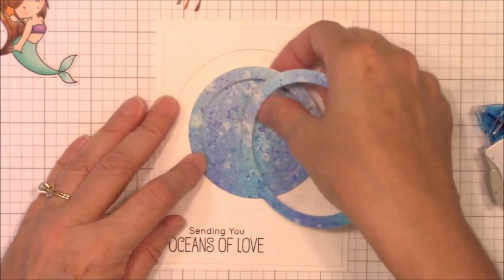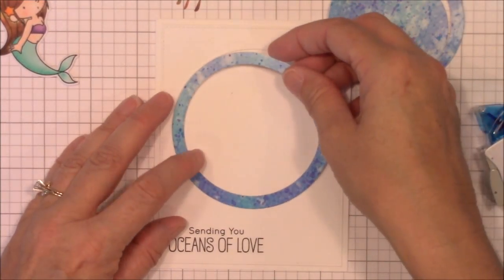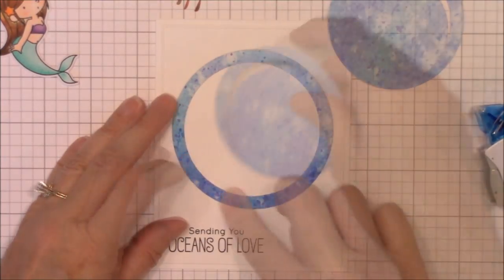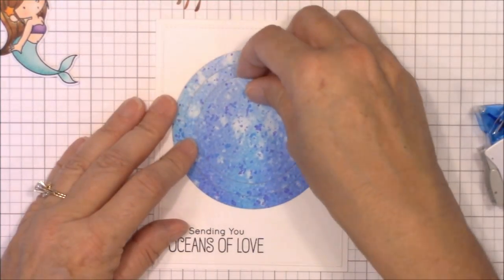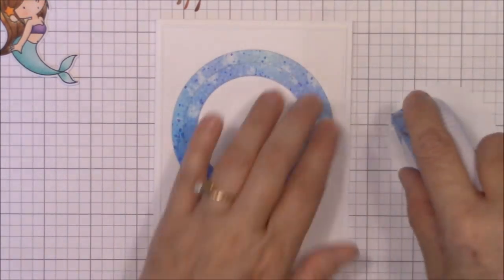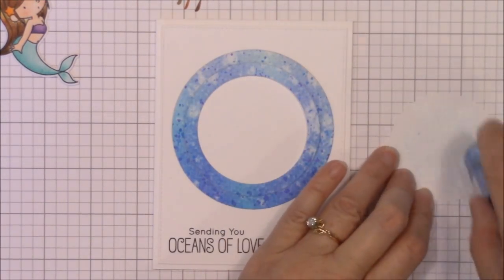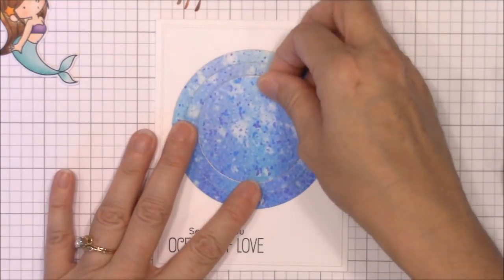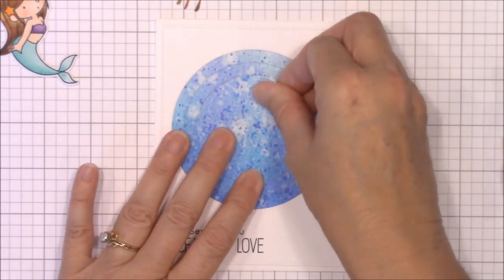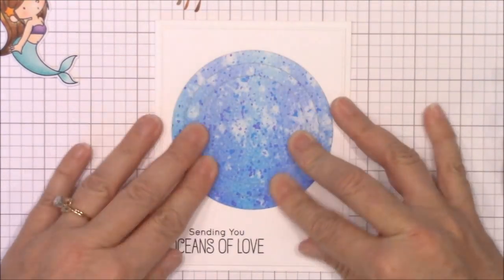Using the image panel aperture I adhere the largest circle onto the card base with some tape runner and use the second circle to position the inside circle which I also adhere to the card base. I kept the circles aligned properly but honestly I think they'd look just as good if the colors were mixed up a bit. Use your creative imagination.